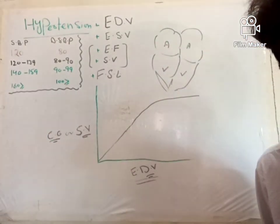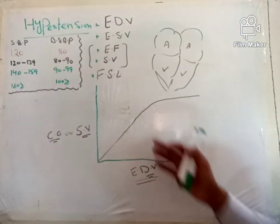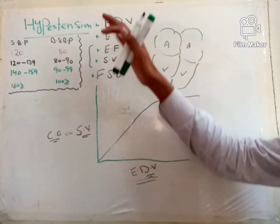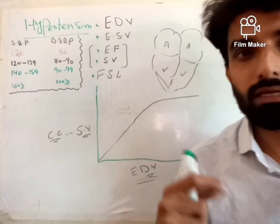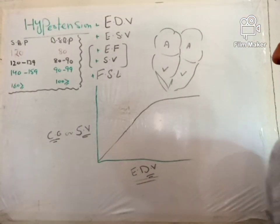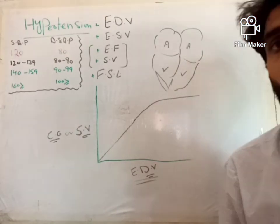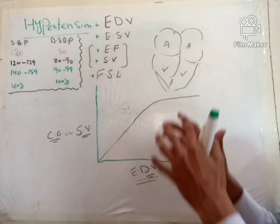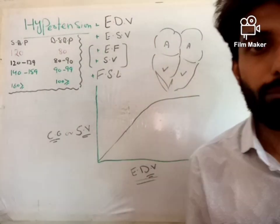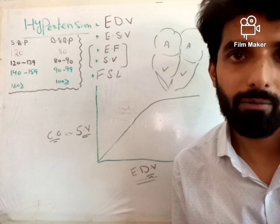So we can say that increased end diastolic volume increases stroke volume and cardiac output. This was Frank-Starling law. These terms will come up repeatedly when we discuss the pathophysiology of hypertension, so it was important to clarify them before starting that topic.